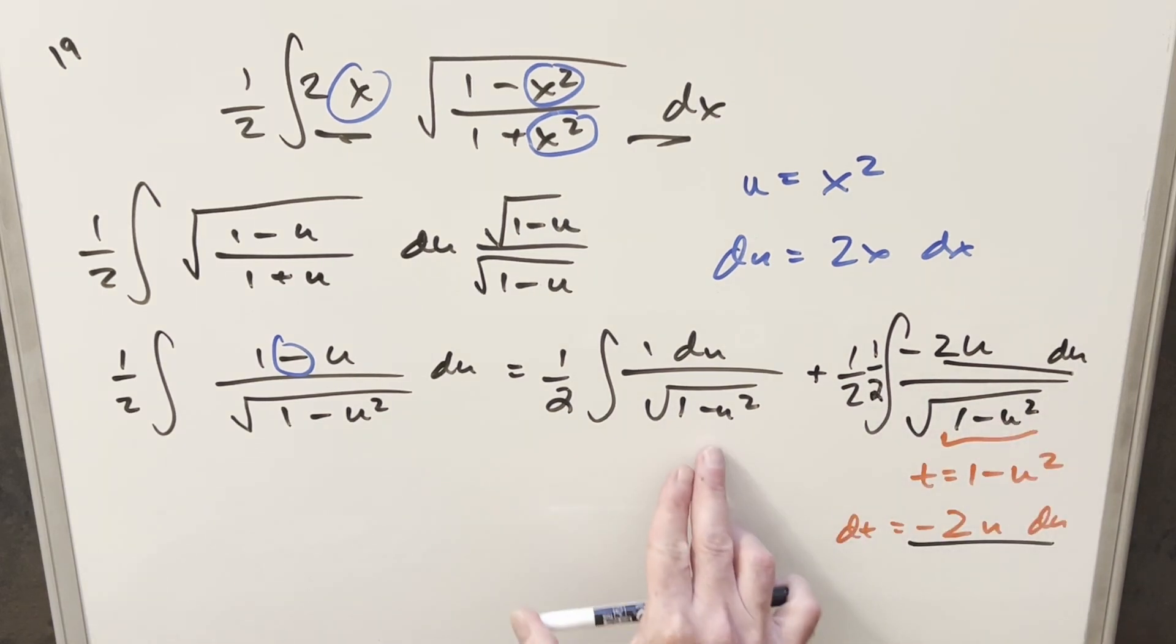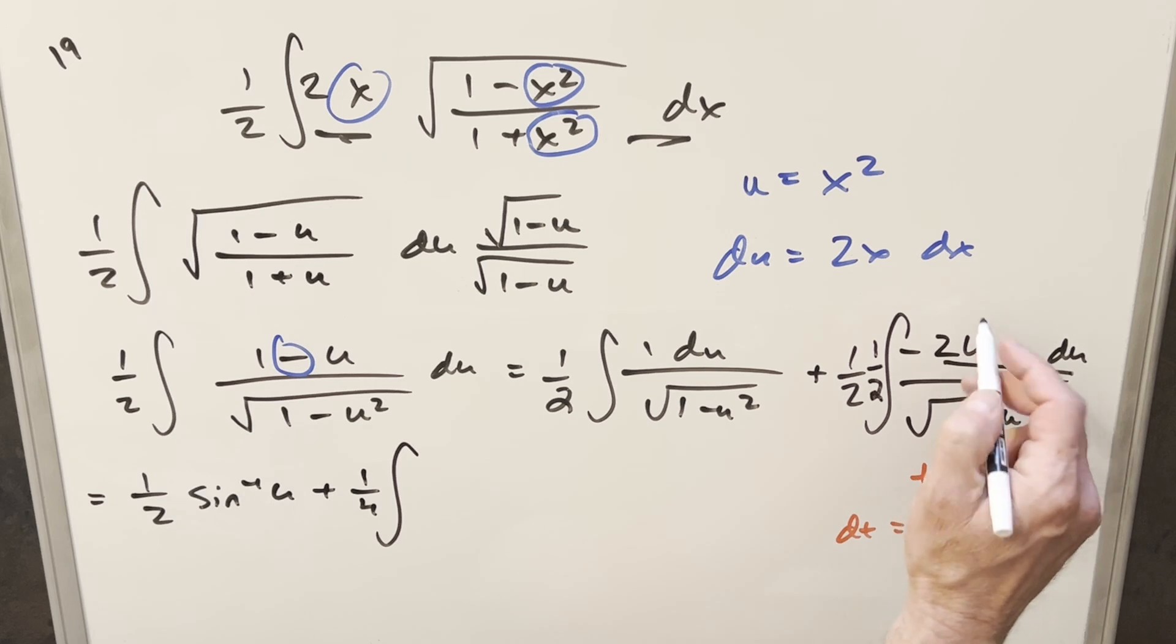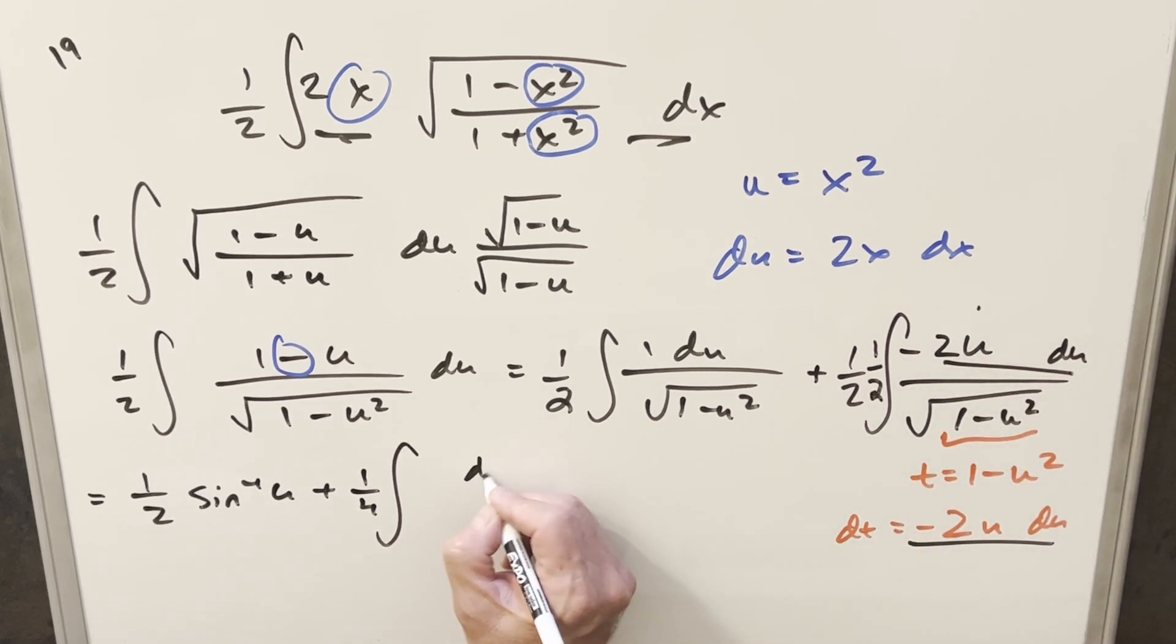So then we'll substitute here, and we'll finish this one, because this is just going to be arcsine. So for the first part, we're going to have here just 1 half arcsine of u. And then here, 1 half times 1 half is going to be 1 fourth. Then substitute, the whole numerator is going to be this dt over square root of t.